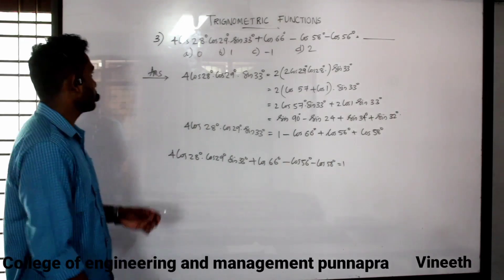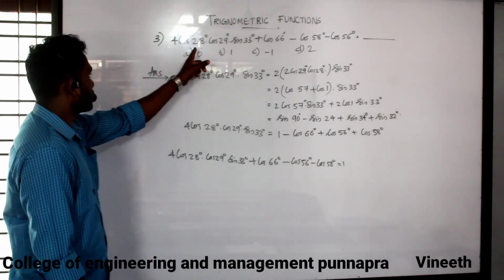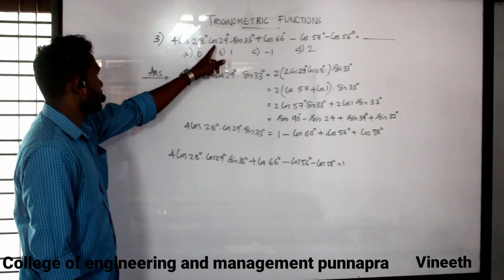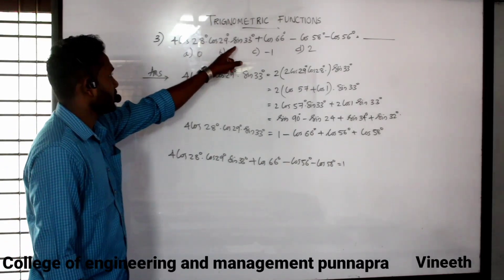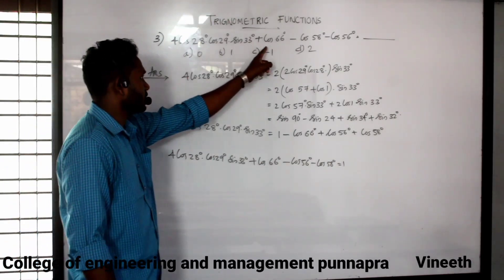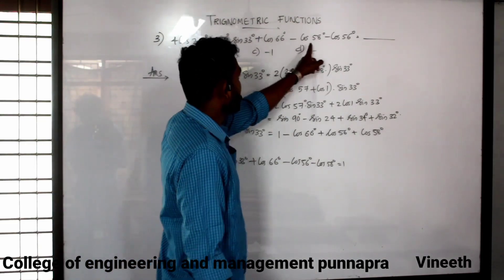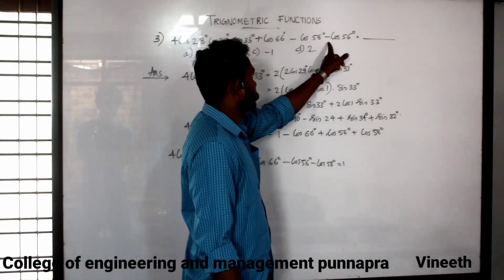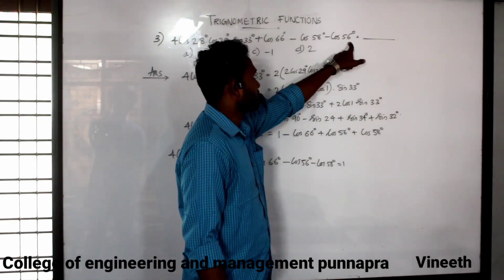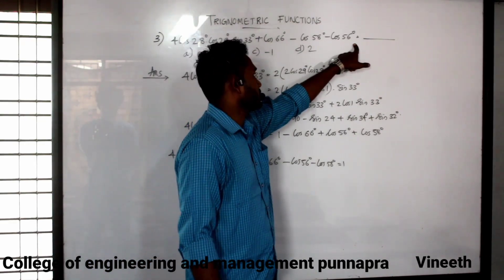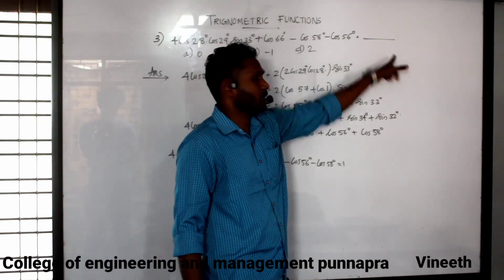The next question is: 4 cos 28 degree times cos 29 degree, plus cos 20 degree, minus cos 58 degree, minus cos 860 degree — introduction of question.